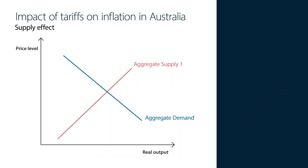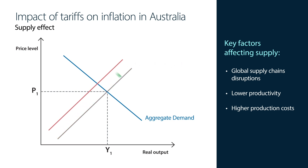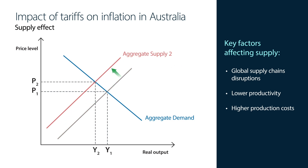But there's also a supply side effect. Tariffs can disrupt global supply chains, making it harder or more expensive to get parts from overseas. It can also lower productivity and raise the cost of production. All of this means the economy can't produce as much as before, which causes aggregate supply to decrease and pushes up prices.